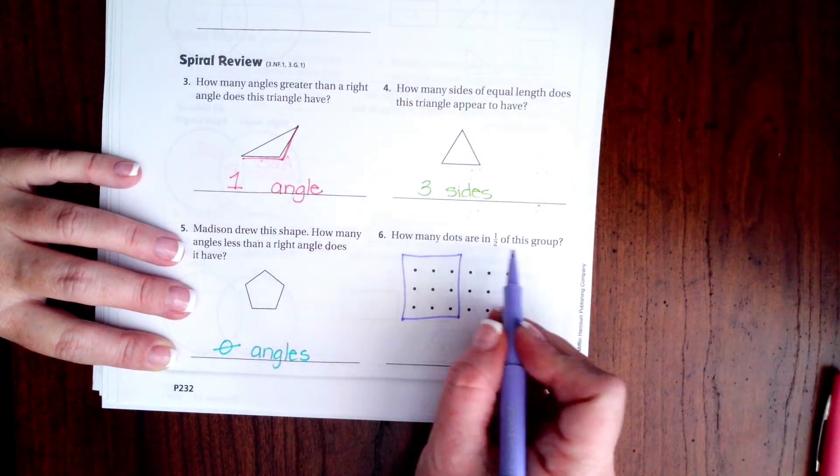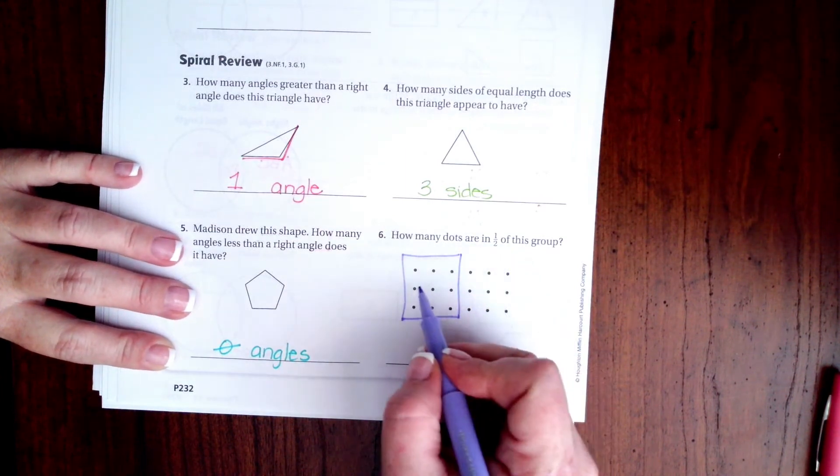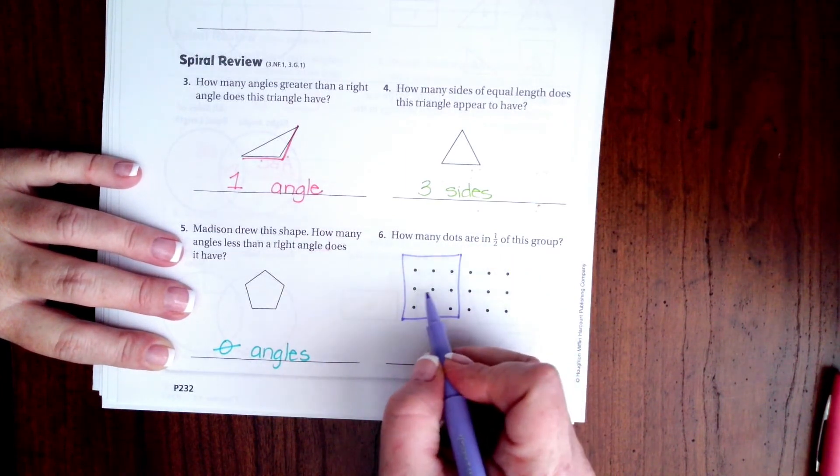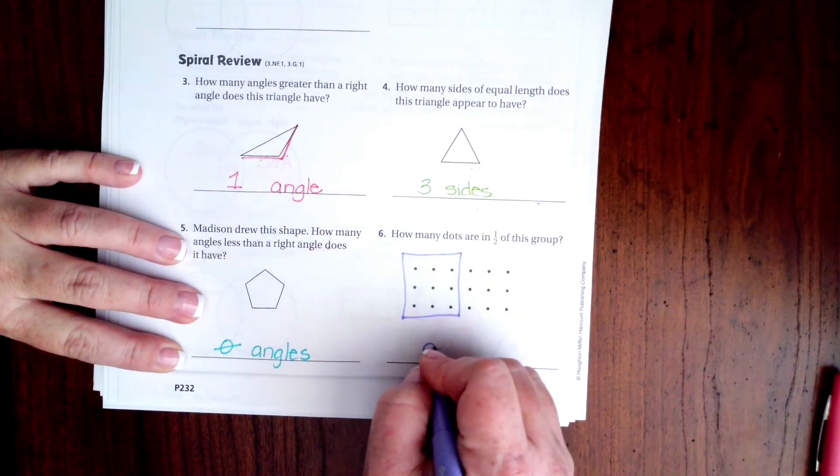How many dots are in half of it? There's one, two, three, four, five, six, seven, eight, nine. Nine dots.